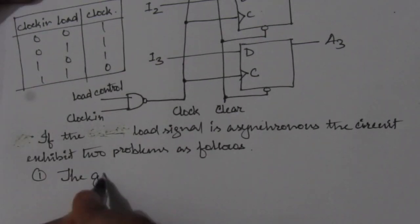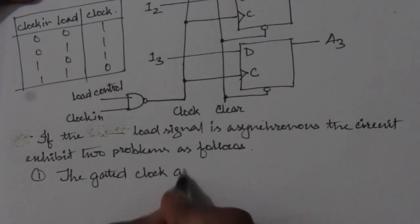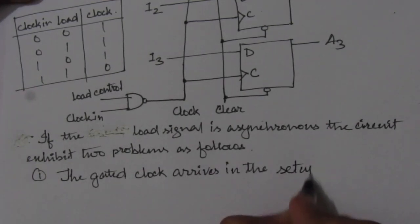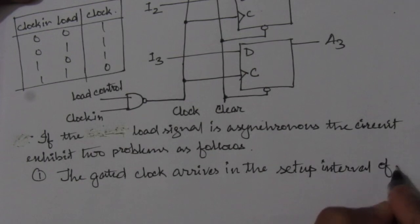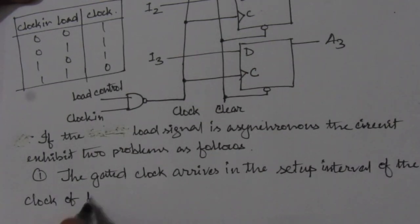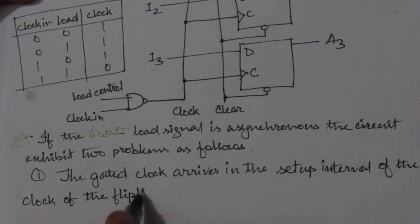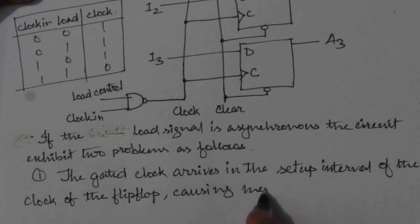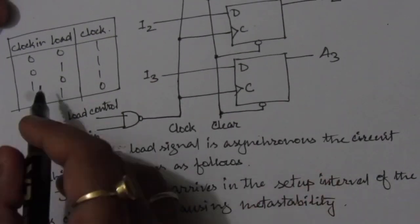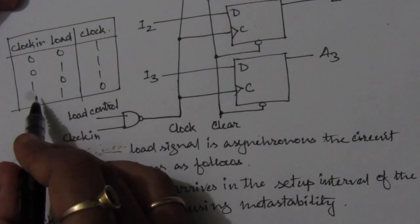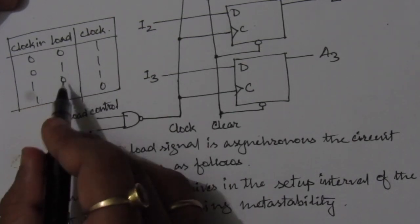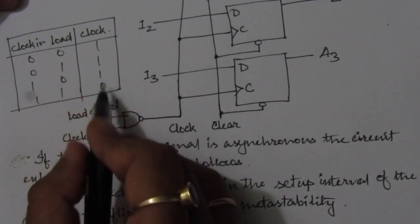the gated clock arrives in the setup interval of the clock of the flip-flop causing metastability. That means whenever we have here, we can see that whenever we have clock is 1, 1, but load is 0 and 1, this clock is changing now.